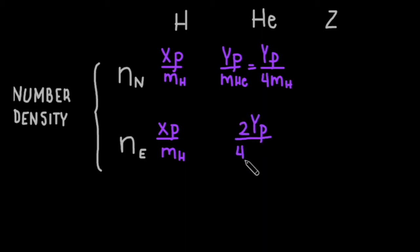Since a helium atom has 2 electrons, the number density is 2 times y times the density over 4 times the mass of hydrogen.